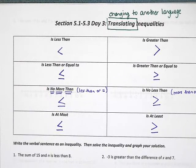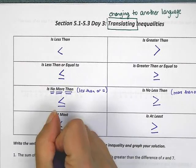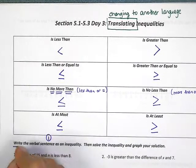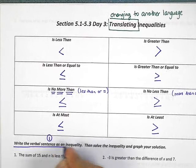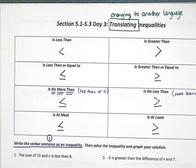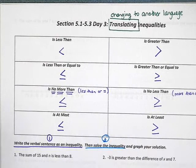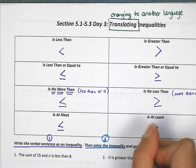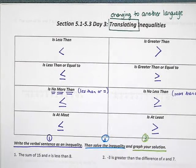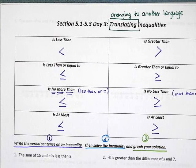In the next few problems, we're going to be asked to do two different things. First, we are going to write our verbal sentence as an inequality. Then we are going to solve the inequality. And then we are going to graph our answer. So let's go ahead and get started.